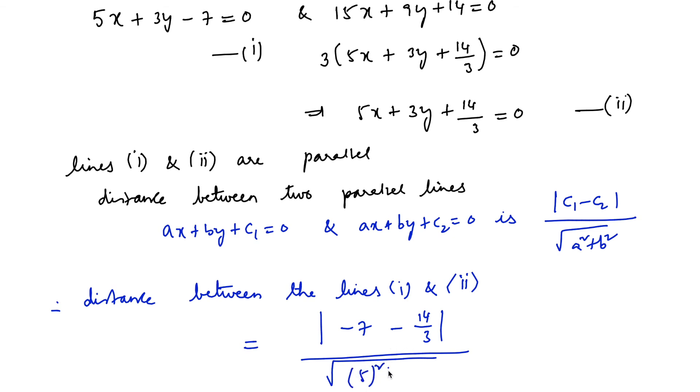A is 5 and B is 3, so 5 square plus 3 square. This equals negative 7 minus 14 upon 3, which is minus 35 upon 3, divided by root over 25 plus 9, which is 34.